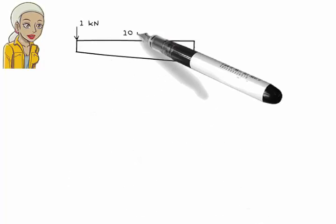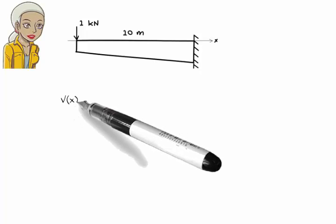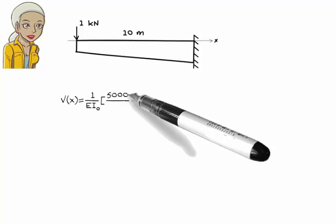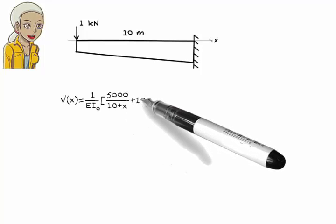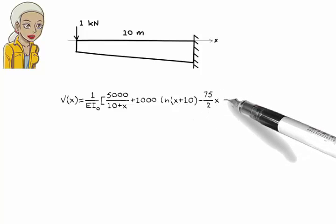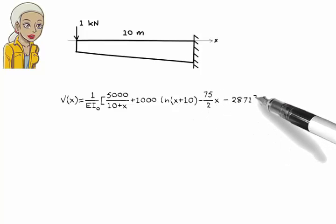Therefore, the deflection equation can be written as v(x) equals 1 over EI₀ times 5000 over 10 plus x plus 1000 times natural log of x plus 10 minus 75 over 2 times x minus 2871.